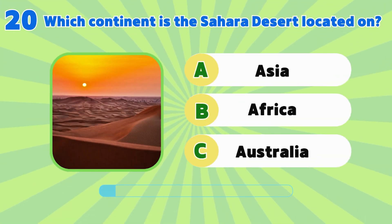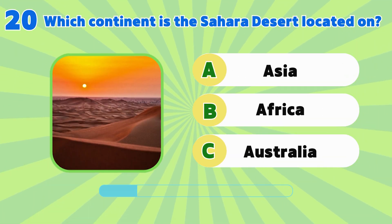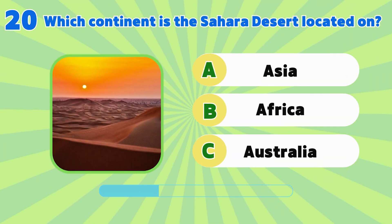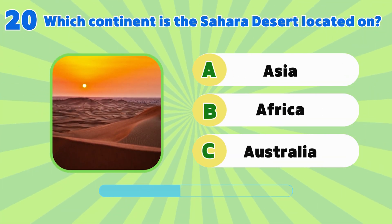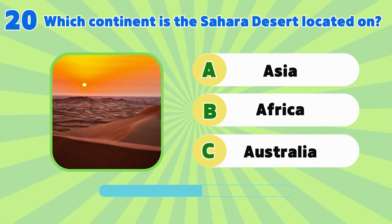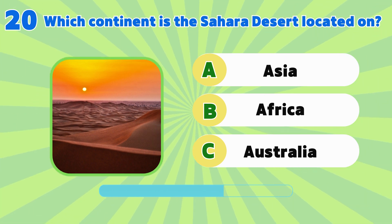Which continent is the Sahara Desert located on? Asia, Africa or Australia?